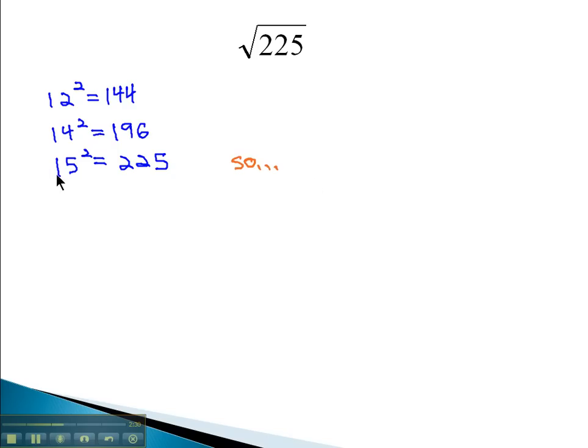So if we know that, then the square root of 225 must be 15. And we have our solution. So square roots are simply asking us, what number squared gives us the number we're looking for? That's the square root.